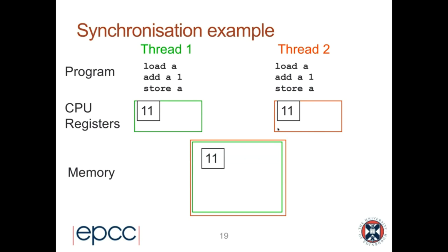Race conditions are particularly nasty because of their non-deterministic behavior. You can run a program 99 times and get the correct answer, then get the wrong answer on the 100th run. This makes software testing much harder than testing sequential code. It's very important to avoid this kind of behavior by thinking carefully about how threads need to synchronize with each other.